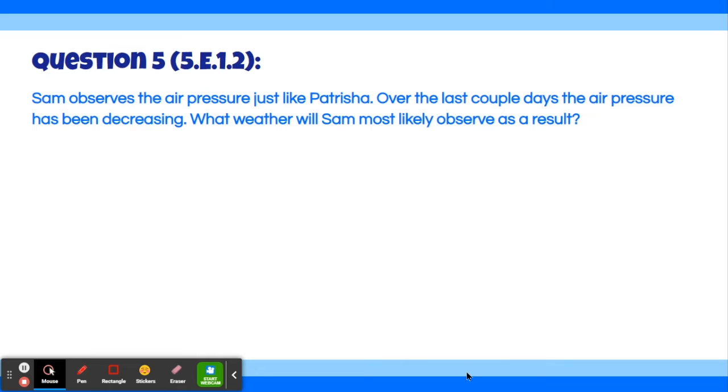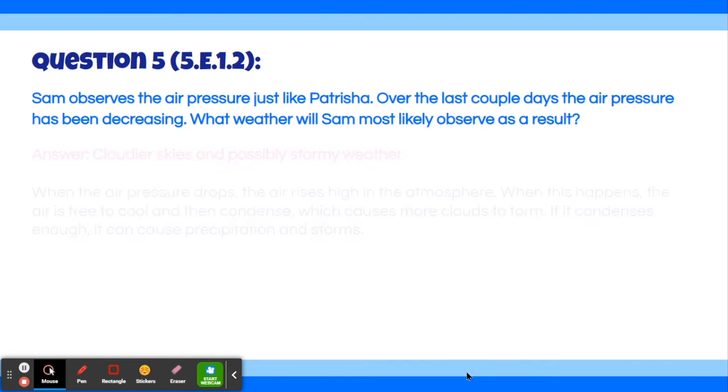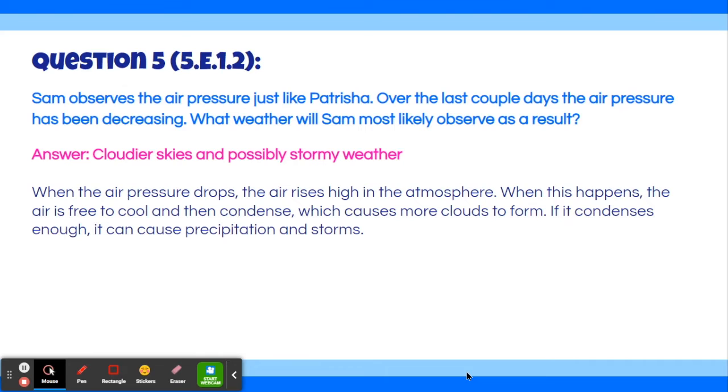Okay, question number five. Sam observes the air pressure just like Patricia. Over the last couple days, the air pressure has been decreasing. What weather will Sam most likely observe as a result? He will observe cloudier skies and possible stormy weather. When the air pressure drops, the air rises high in the atmosphere. When this happens, the air is free to cool, then condense, which causes more clouds to form. If it condenses enough, it can cause precipitation and storms.